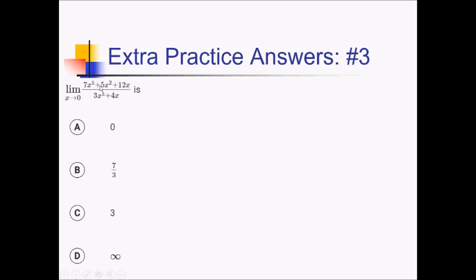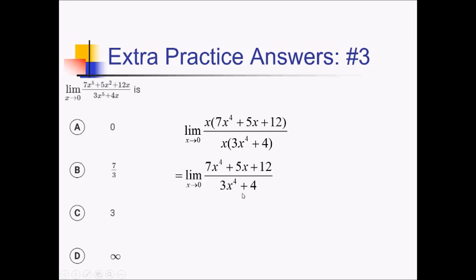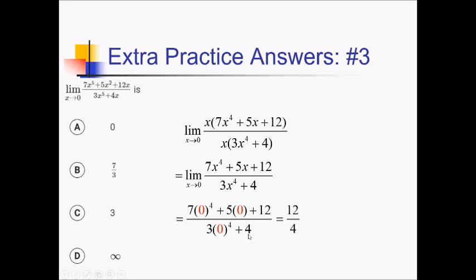In the numerator, I've got x times parentheses 7x to the fourth plus 5x plus 12. Doing the same thing in the denominator, that leaves me with x times parentheses 3x to the fourth plus 4. Now those x's can easily cancel out. At this point, now that I've canceled the thing causing 0 over 0, I'm going to plug in 0 again. That zeros out everything except the constants, so we end up with essentially 12 over 4, which reduces to 3, matching answer choice C.